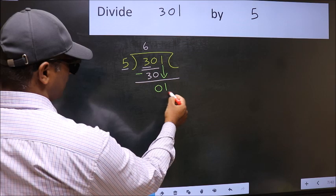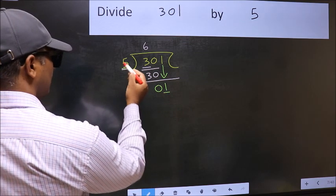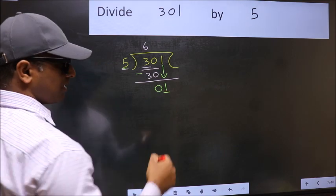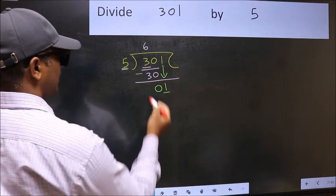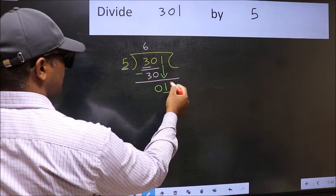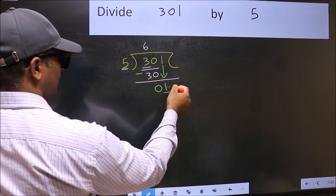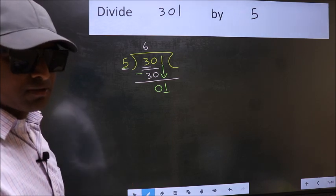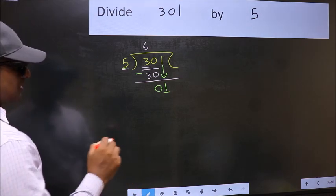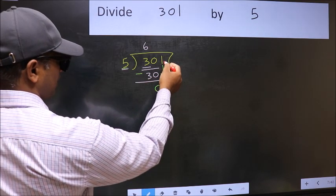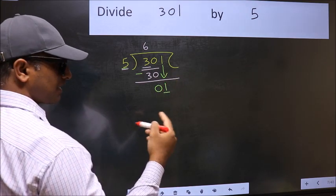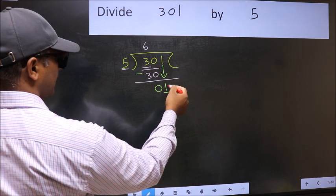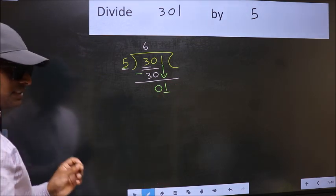Here we have 1 and here 5. 1 is smaller than 5. So what many do is they directly put dot and take 0, which is wrong. Why is it wrong? Because just now you brought this number down, and in the same step you want to put dot and take 0, which is wrong.